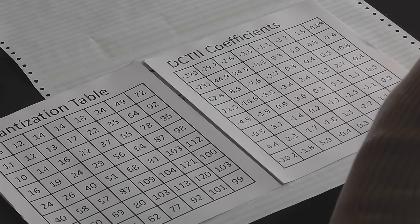And what we do is we divide every one of our coefficients by the corresponding quantization value, and then round to the nearest integer.